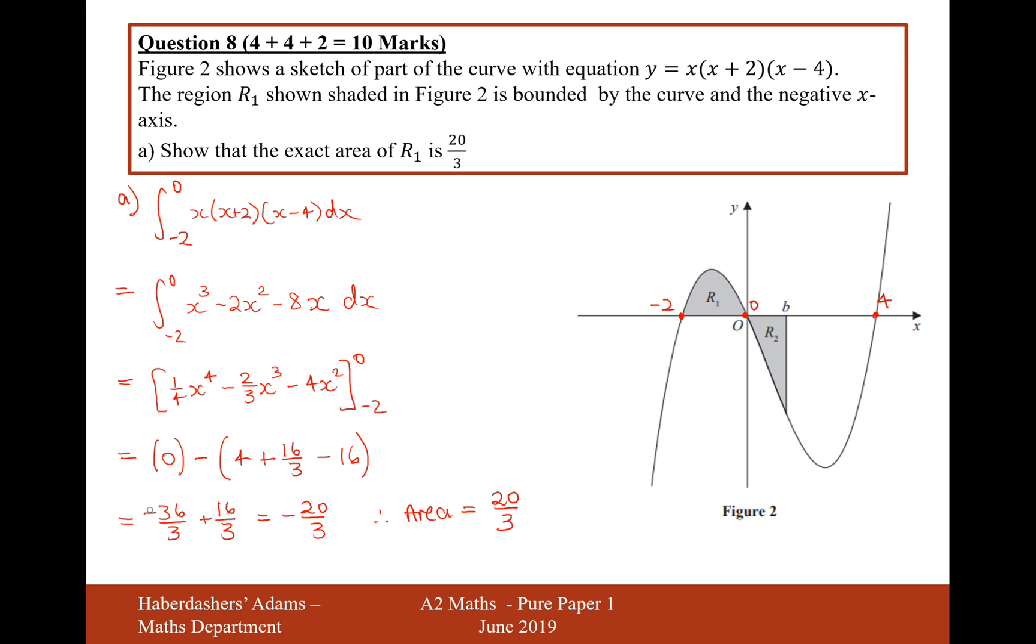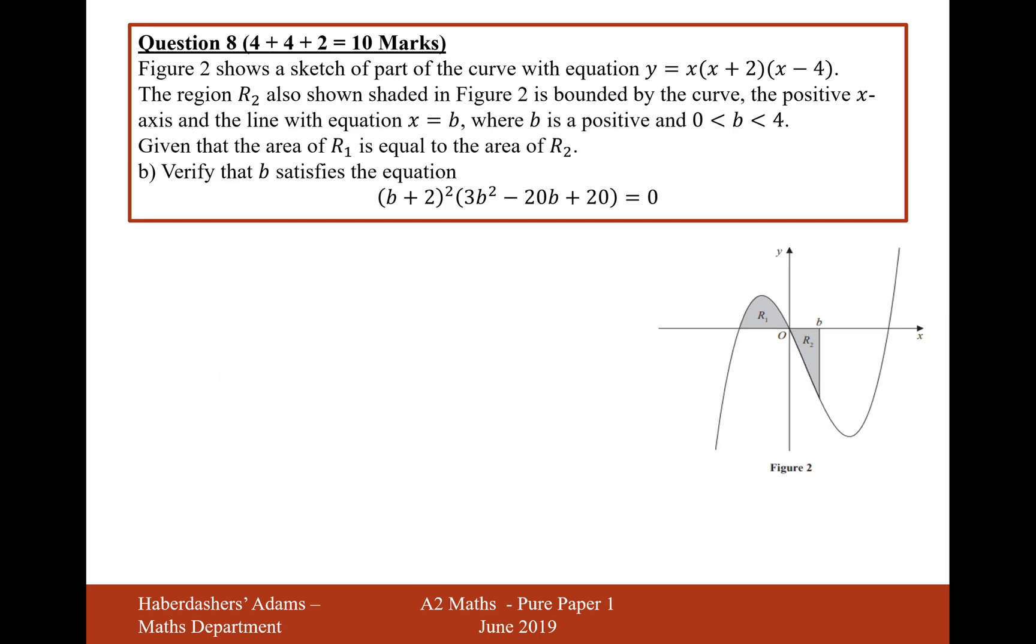Wait, I did the signs wrong. That should be a plus, that should be a minus. So that should be a plus. Therefore the area is 20 over 3. There we are, that's the answer to part A. Just make sure you incorporate the negative into your second bracket.